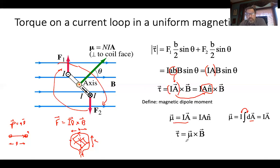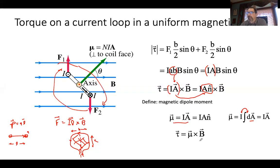This is analogous to an electric dipole P, where we define P to be the charge times the length L between positive and negative, directed from negative to positive. An electric dipole would rotate in an electric field, and similarly a magnetic dipole will rotate.